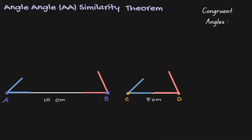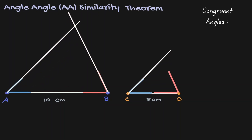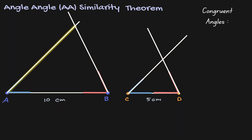What would happen if we extend the lines of those angles? By doing so we have created two triangles — the triangle on the left and the triangle on the right.